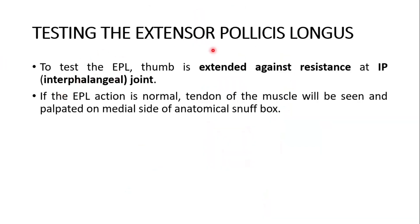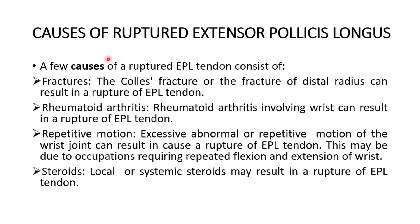To test the extensor pollicis longus, the thumb is extended against resistance at the interphalangeal joint. If the extensor pollicis longus tendon is normal, the tendon of the muscle will be seen and palpated on the medial aspect of the anatomical snuff box.